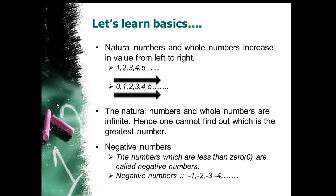The next thing we are going to learn is negative numbers. The numbers which are less than 0 are called negative numbers. As we have already learned, natural numbers are called positive numbers. You may think we have not learned any number which is less than 0, but yes, we do have numbers less than 0, and these are called negative numbers. For example: minus 1, minus 2, minus 10 — these kinds of numbers which have a minus sign to the left of them.